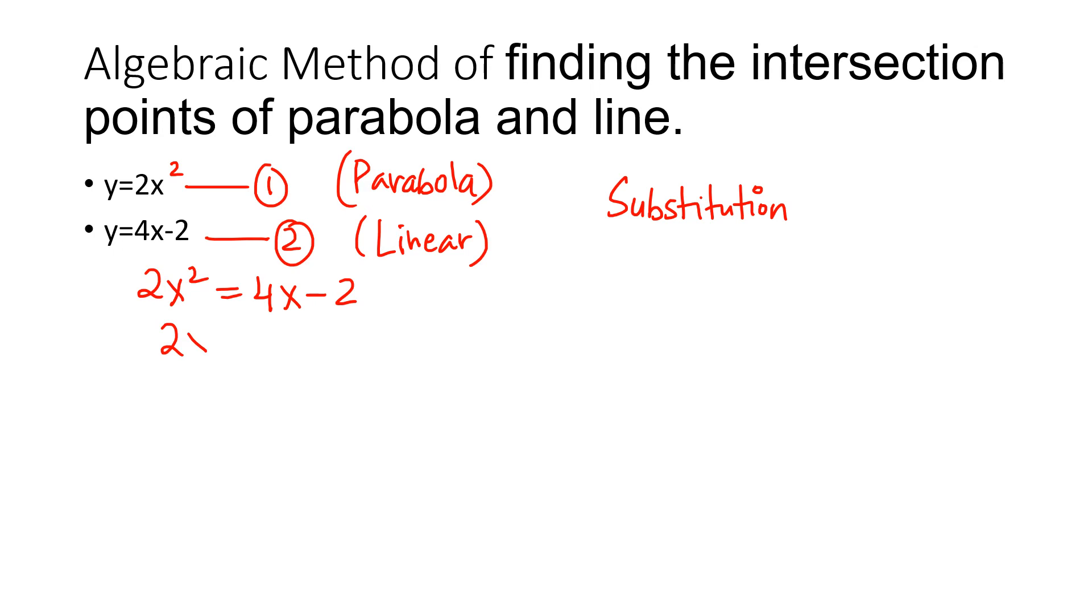Now this is a quadratic equation, and its roots will give you the intersection points. Let's take everything on one side. Now what I've got is a quadratic equation. It has a common factor of 2, so we can divide by 2 to remove it. So it is x squared minus 2x plus 1 equals 0.